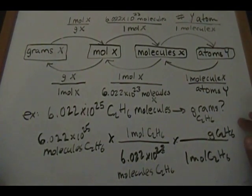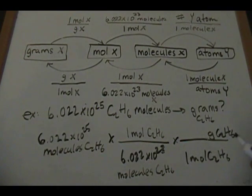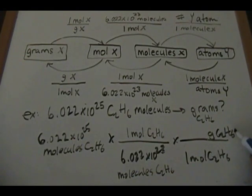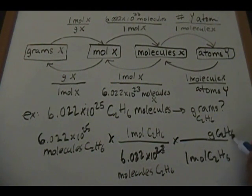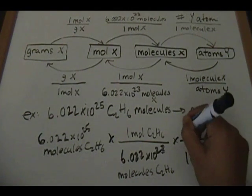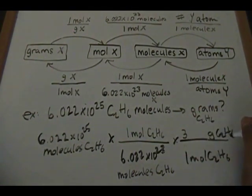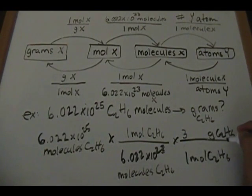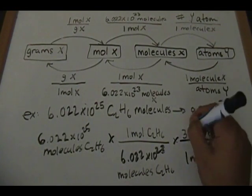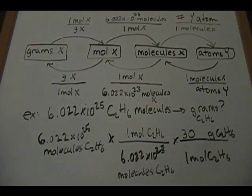We're going to use the same technique to determine the molar mass of ethane. I'll approximate: carbon weighs about 12 grams per mole, and we have two of them, so that's 24. Hydrogen weighs about 1 gram per mole, and we have six of them, so that's 6. So 24 plus 6 equals about 30 grams per mole. Look at the periodic table, multiply each element's mass by its count, add them together, and that's your molar mass.